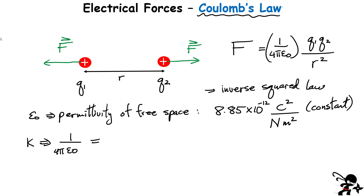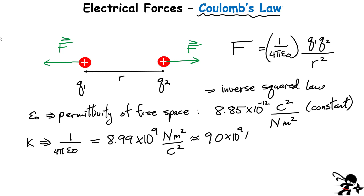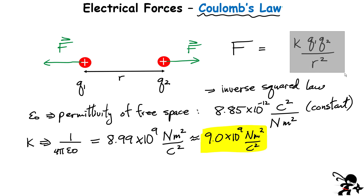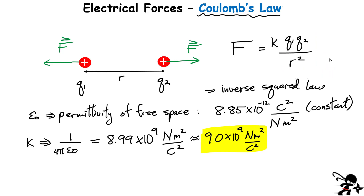Many textbooks use k = 9.0 × 10⁹ N·m²/C². That's the value we'll use throughout this video. So Coulomb's law simplifies nicely to F = k × |q1| × |q2| / r². Let's now apply this equation to several different cases to see how the numbers work out.